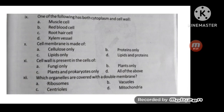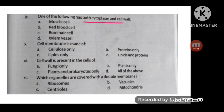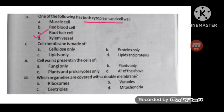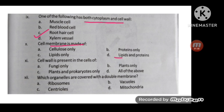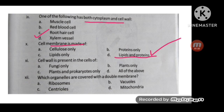Which of the following has both cytoplasm and cell wall? The correct option is C: root hair cell. The cell membrane is made up of proteins and lipids. Next MCQ: cell wall is present in the cell of...